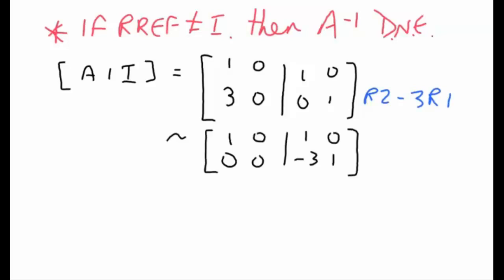And we end up with the following situation. When we look at the left-hand side, this is in reduced row echelon form, but it's not a 2 by 2 identity matrix. And in this case what we have to do is accept that A is not going to have an inverse.